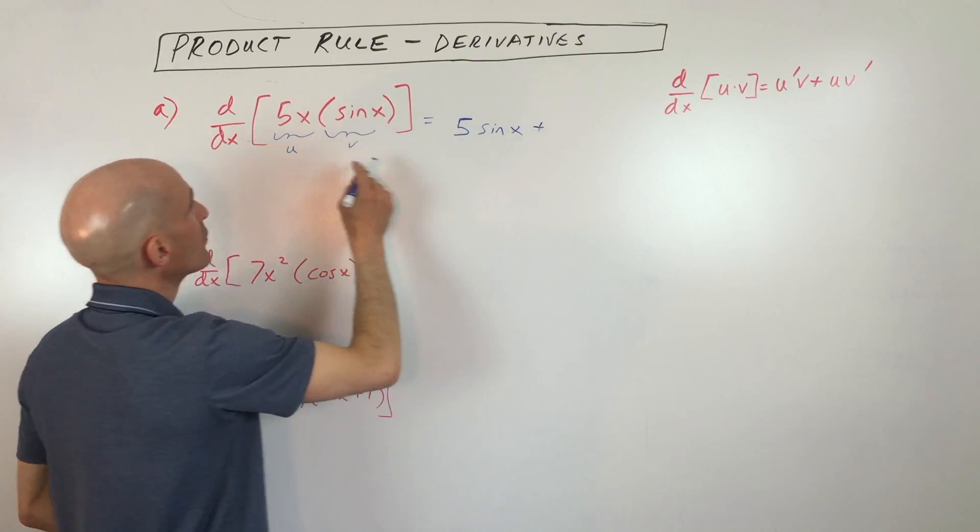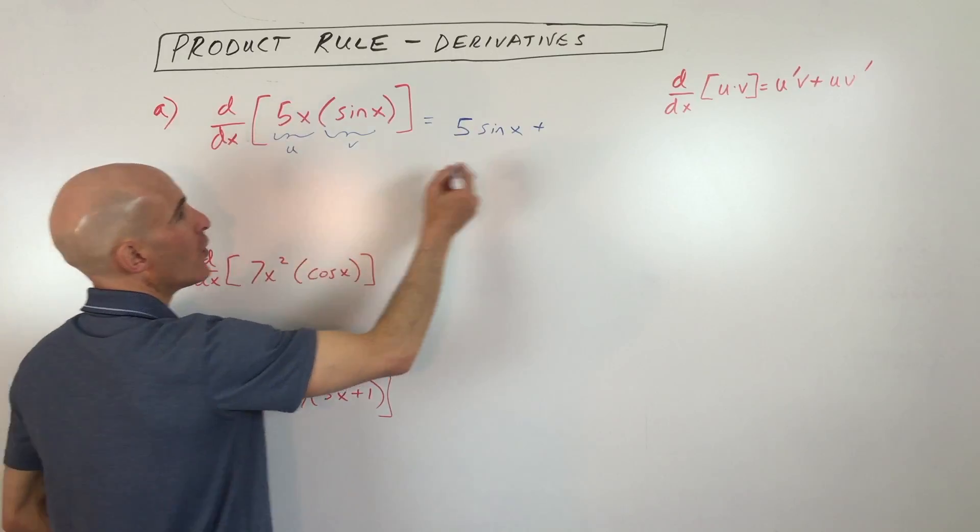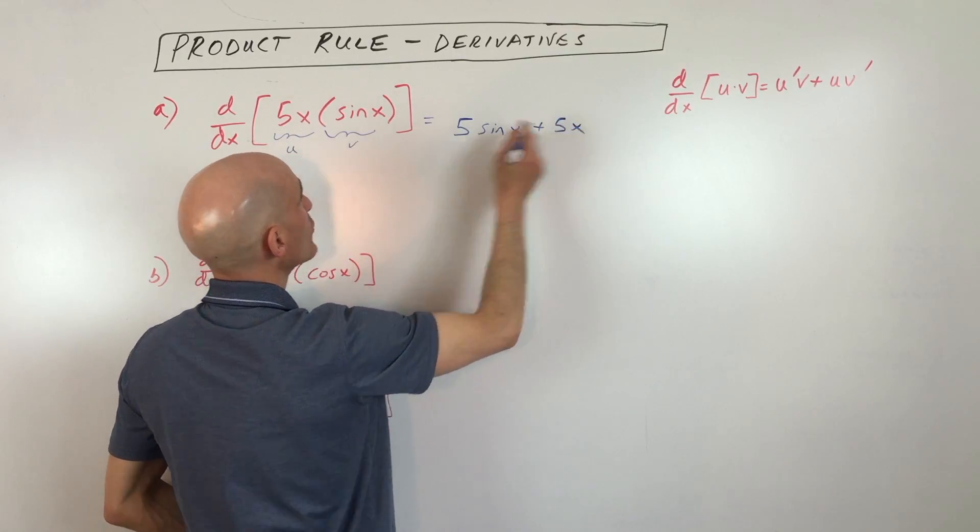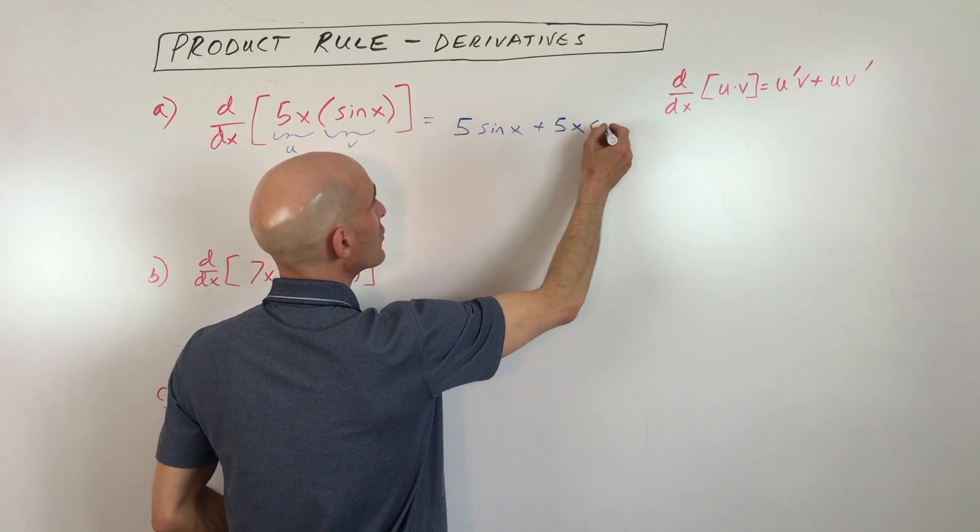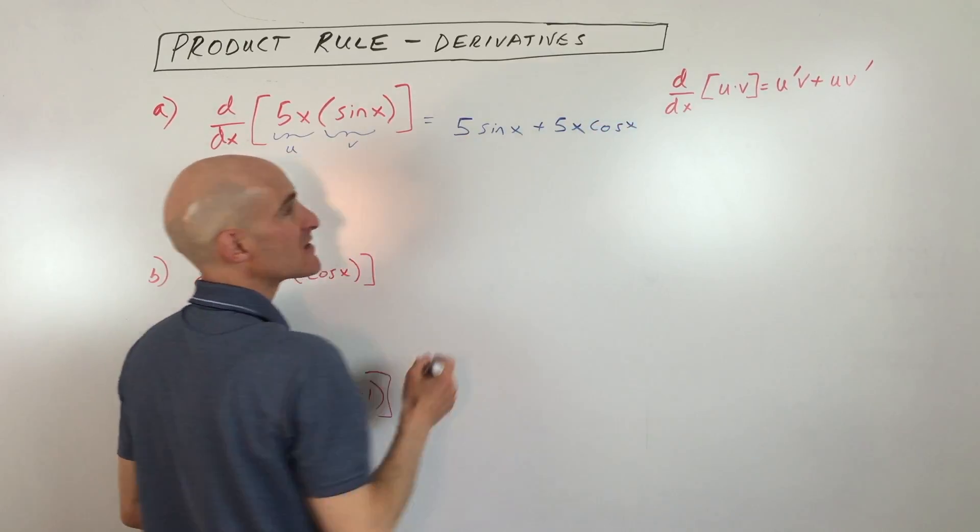Now we're going to reverse it. We're going to leave u alone, which is 5x, but we're going to take the derivative of sine of x, which is cosine x, and that's it. That's your derivative.